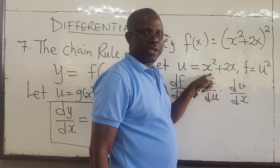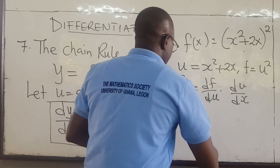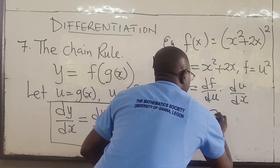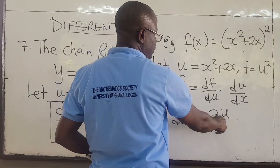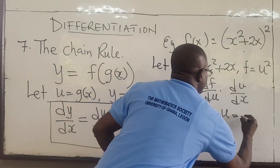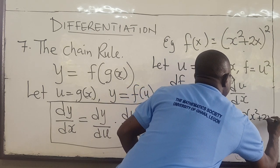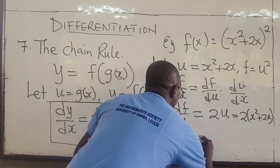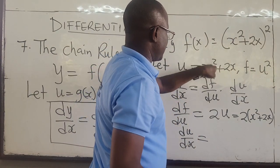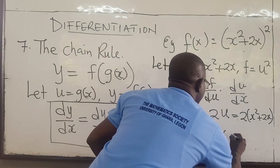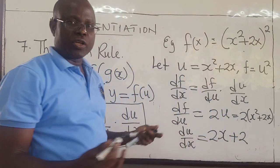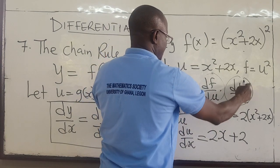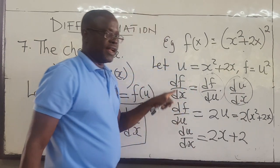The du/dx is easy because this is just a polynomial and we apply the power rule. So df/du is easier to find because we know how to apply the power rule here. df/du will just be 2u, which in terms of x is 2 times x squared plus 2x. And du/dx will be equal to the derivative of the inner function with respect to x. The derivative of x squared is 2x, and the derivative of 2x is 2. Now we have all the ingredients — we know df/du and we know du/dx. Substitute these in to get df/dx.